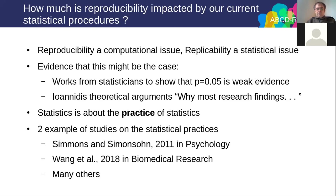There is a bunch of evidence that we are not in a very good state. Work from statisticians shows that the classical p-value threshold of 0.05 used to decide whether to reject the null is weak evidence. There are theoretical arguments and simulations to show that most research findings may be false in the life science field. It's also a matter of practicing statistics — even a good test can be implemented poorly.